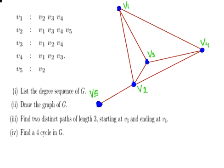Find the two distinct paths of length three, starting at v3 and ending at v4. So, if it is of length three, it must pass through three edges.